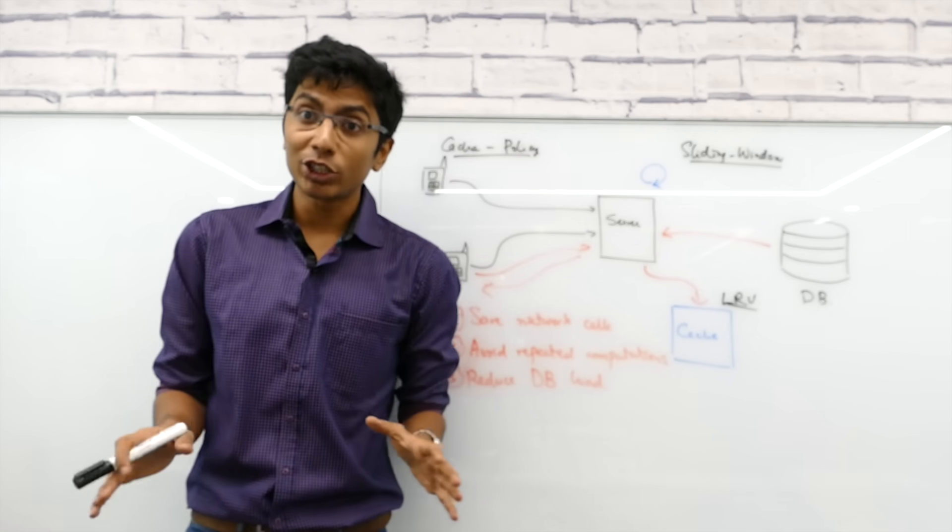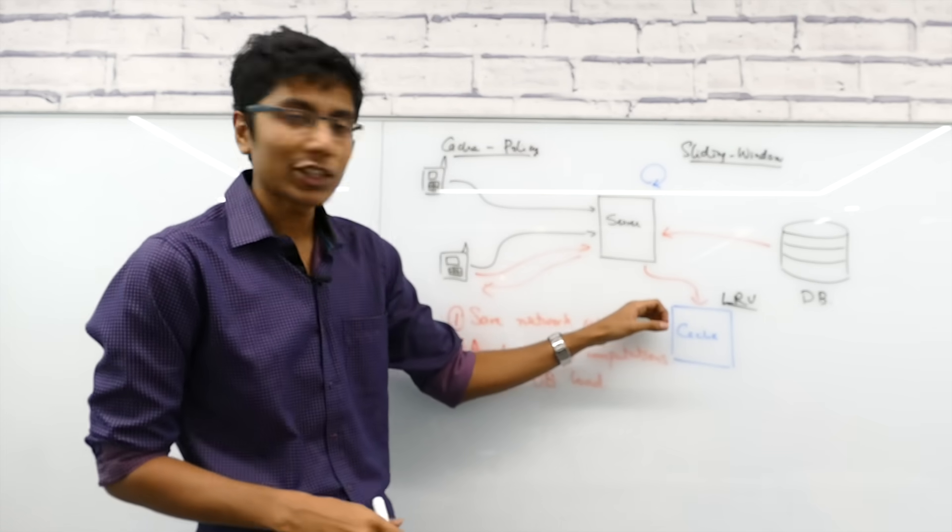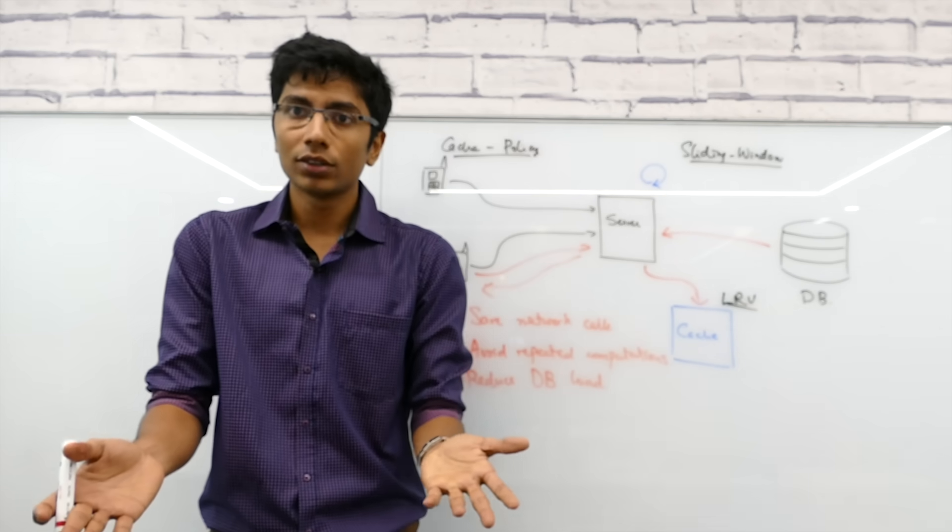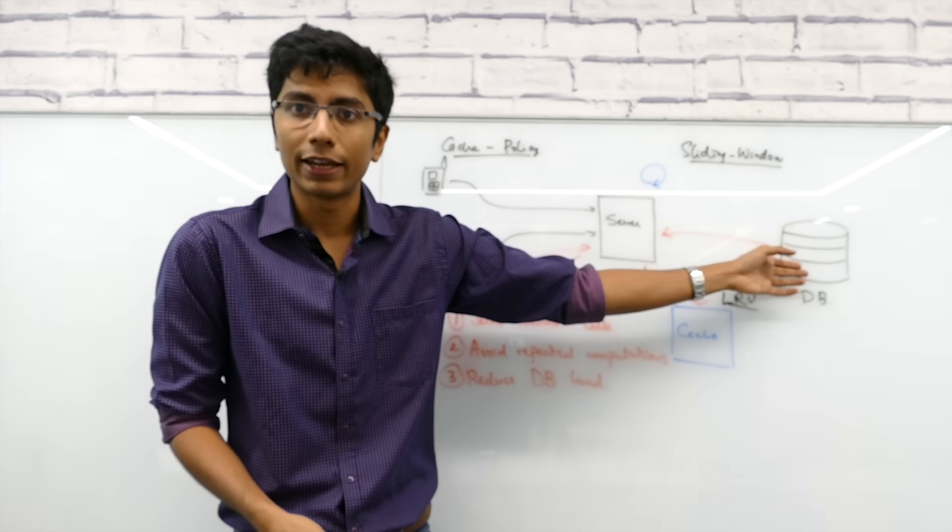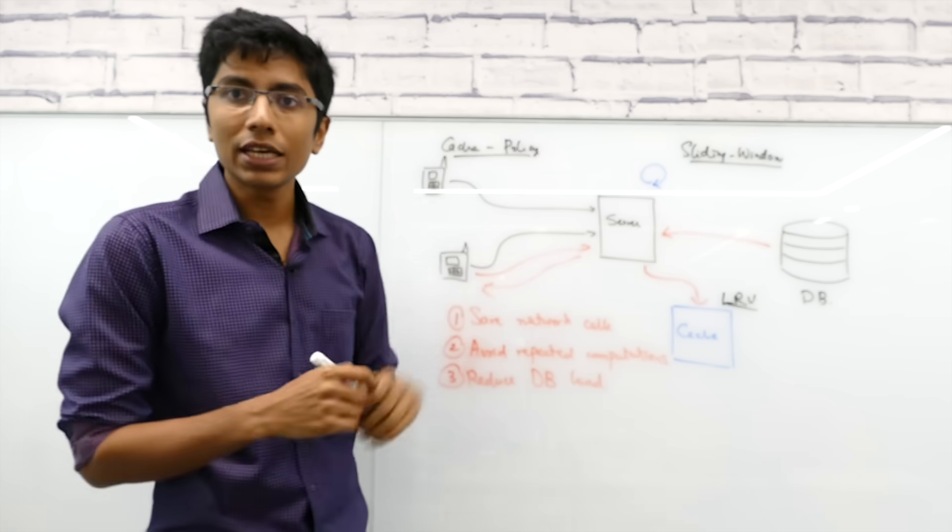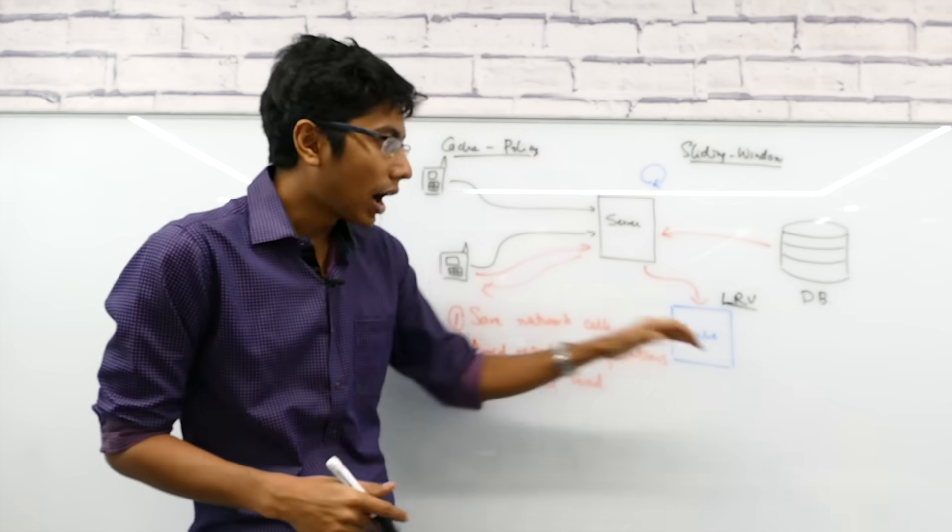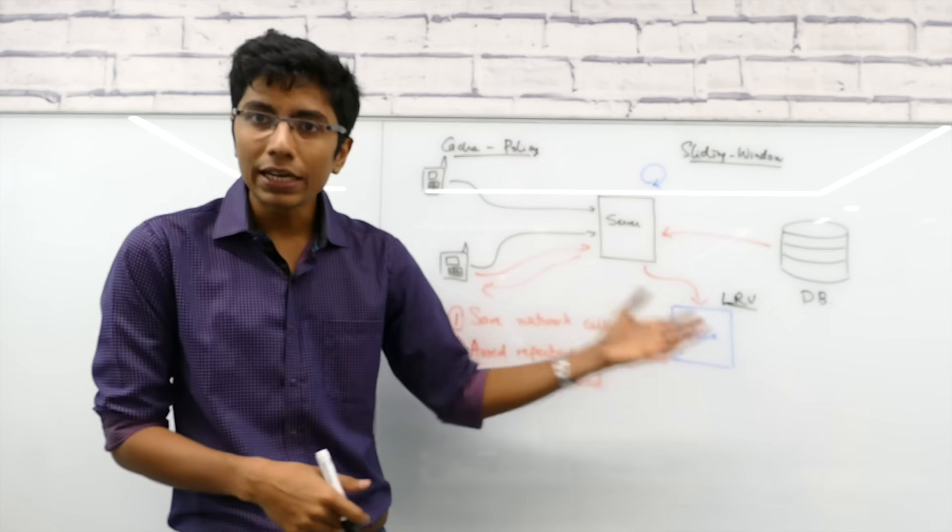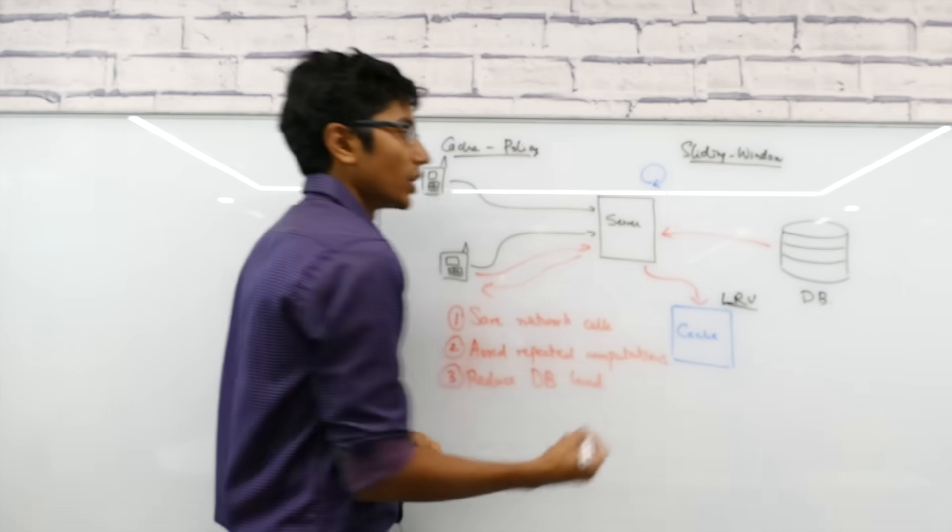Now imagine you have a really poor eviction policy, which means that hitting the cache is of no use. I mean, you ask the cache for some data, it always responds with, I don't have it. And then you have to go to the database again. The first problem over here, which is with a poor eviction policy, is that it's actually harmful to have a cache, because you are making that call, that extra call, which is completely useless if you have a poor eviction policy.